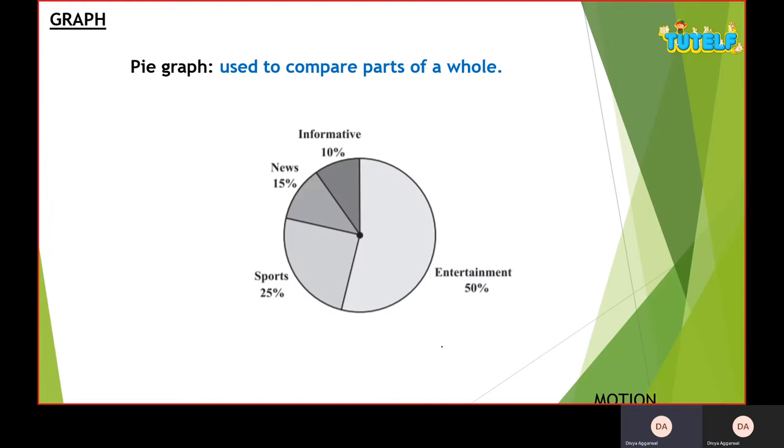The second graph is a pie graph. The pie graph is used to compare parts of a whole, and this whole is considered to be 100%, so that is 100 percent. This hundred is divided into various segments and these segments tell us the graph information. For example, out of entertainment 50%, sports is 25%, news is 15%, and informative is 10%.